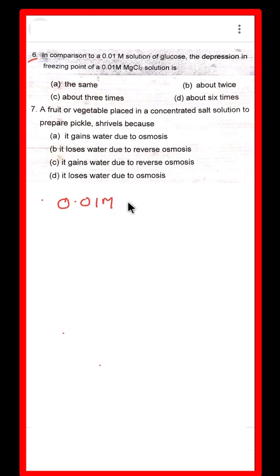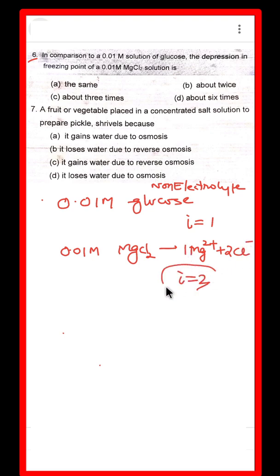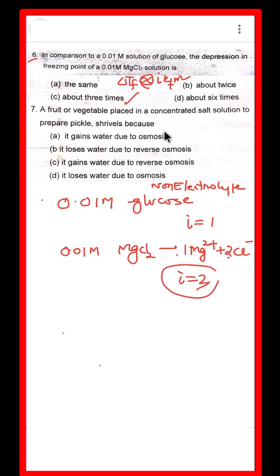Question 6 compares a 0.01 molar glucose solution and magnesium chloride (MgCl2). Glucose is a non-electrolyte, so its van't Hoff factor is 1. MgCl2 ionizes into Mg²⁺ and 2Cl⁻, giving a van't Hoff factor of 3 — so its colligative properties are three times greater. Depression in freezing point ΔTf is directly proportional to the van't Hoff factor × Kf × molality.